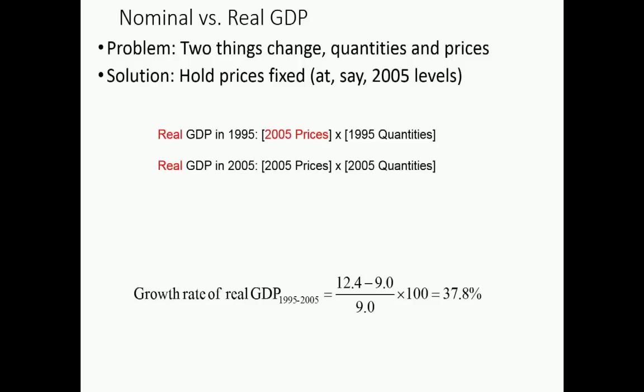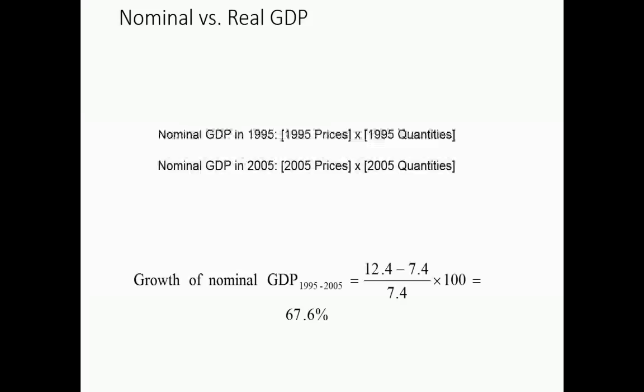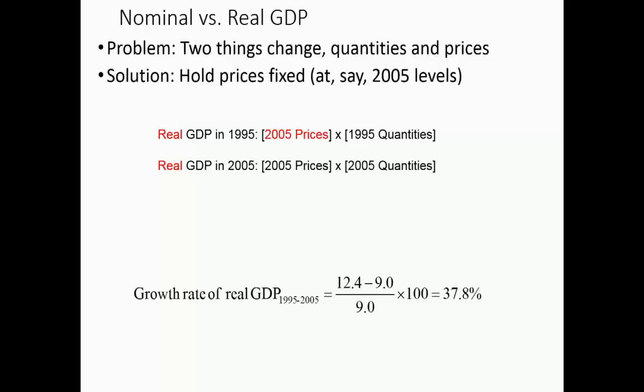If we calculate real GDP in both years and take the growth rate, we get a different number. Using 2005 as the base year, real GDP and nominal GDP are the same in 2005. But real GDP in 1995 is now different — say nominal GDP in 1995 was $7.4 trillion, but it becomes $9 trillion when we use 2005 prices. So real GDP growth is considerably lower in this case than nominal GDP growth was. The difference between those is the increase in the overall price level.